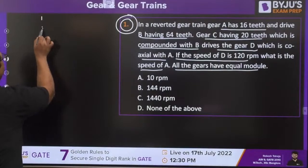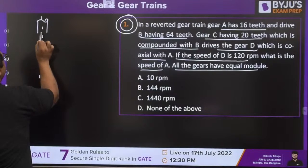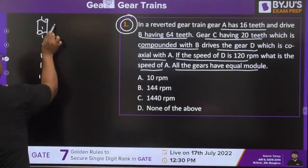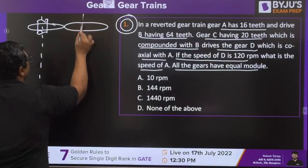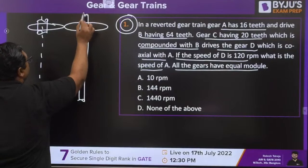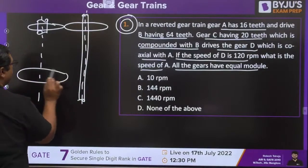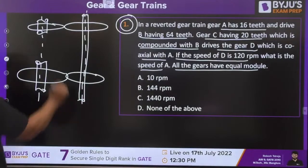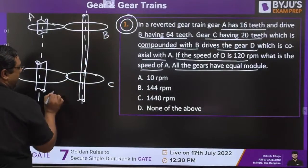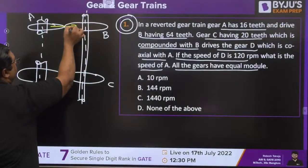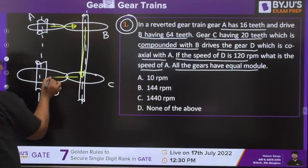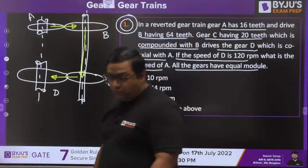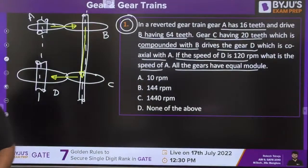Here is a figure to help: A is the driver, then there is a compound shaft, and D is the driven gear. Power is transmitted from A to B, then B to C, then C to D. Try to solve this question — I'm waiting for your answers.